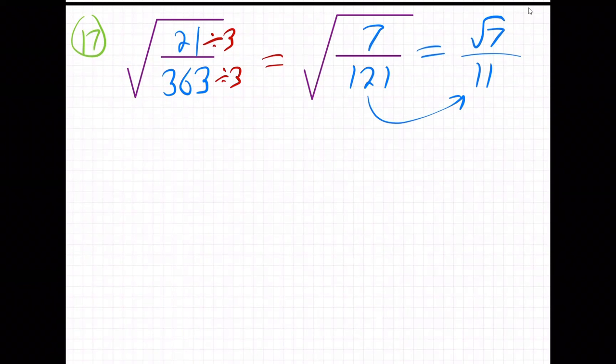I just divided top and bottom by 3, and it became 7 over 121. The square root is over both of them, so you try to square root both. But you can't square root 7, so the root just stays there. But you can square root 121—that's just 11, no more root. It did its job on the bottom.